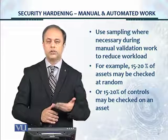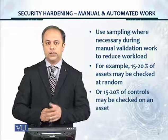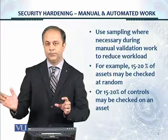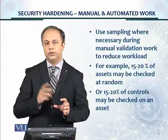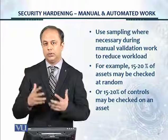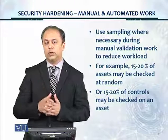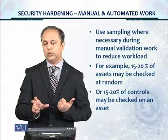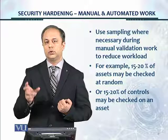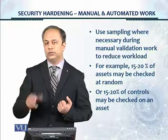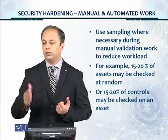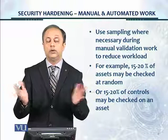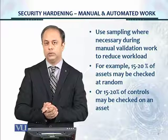There are two ways to apply sampling. For example, if there are 100 Windows Server 2012 servers, you can choose controls 50 to 100 and check those on a random selection of servers to verify they are applied. Alternatively, you can select specific servers and stagger the control ranges: check controls 1 to 20 on server one, controls 21 to 40 on server two, controls 41 to 59 on server three, and so on. This way, all controls get covered across the sampling exercise.